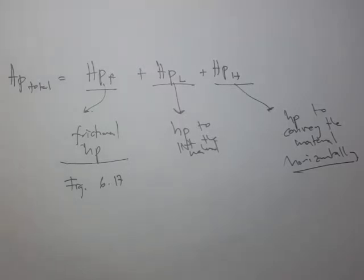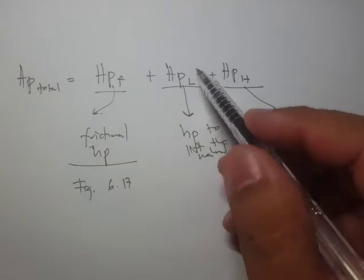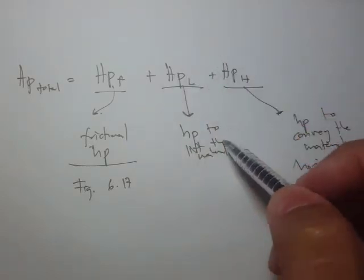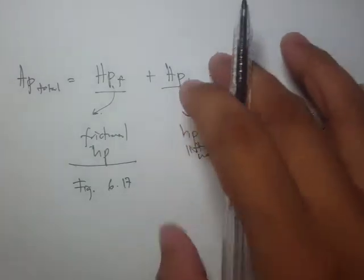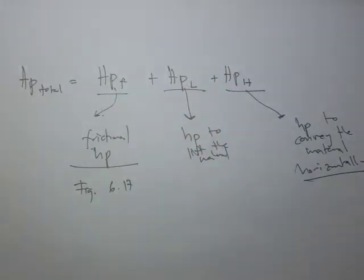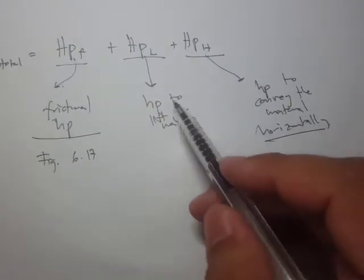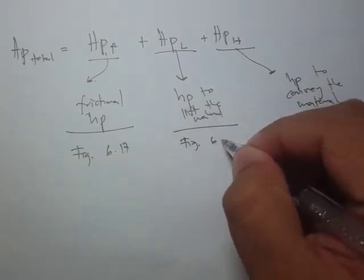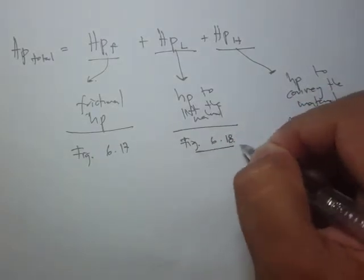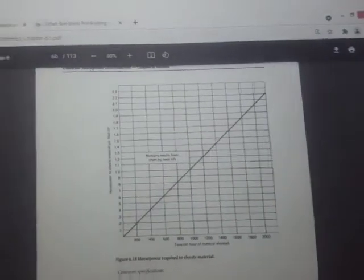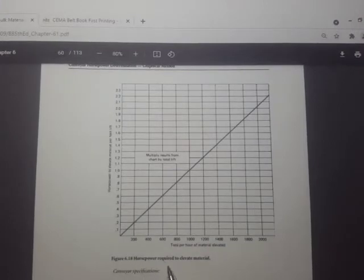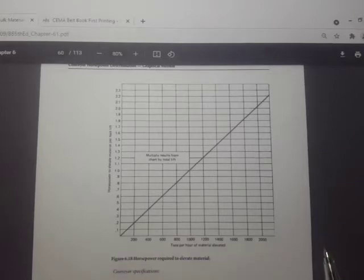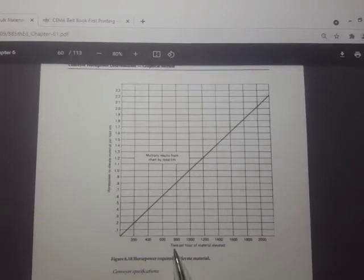Okay, hello there, welcome back. Now we'll discuss the horsepower required to lift the material — that's the elevation, the vertical transport, the vertical aspects of conveyance. This horsepower to lift the material may be obtained from Figure 6.18. In that figure, along the x-axis we have the tons per hour of material elevated, which is our capacity.